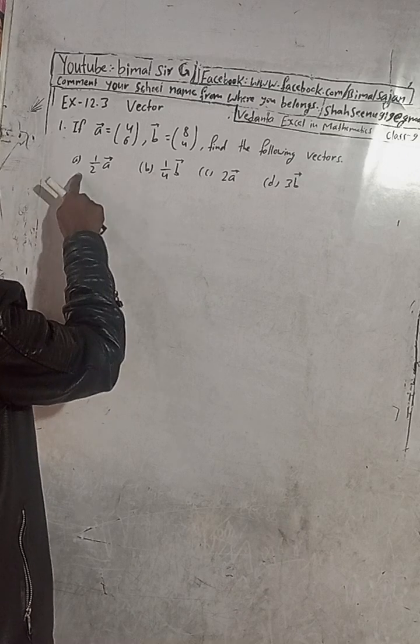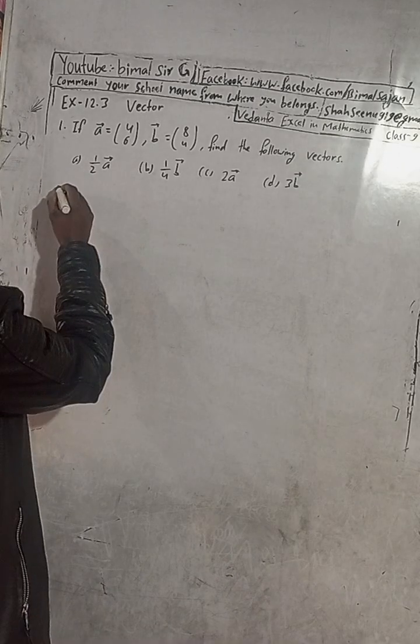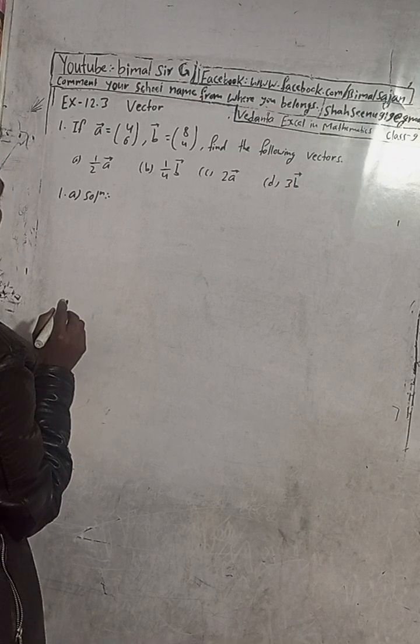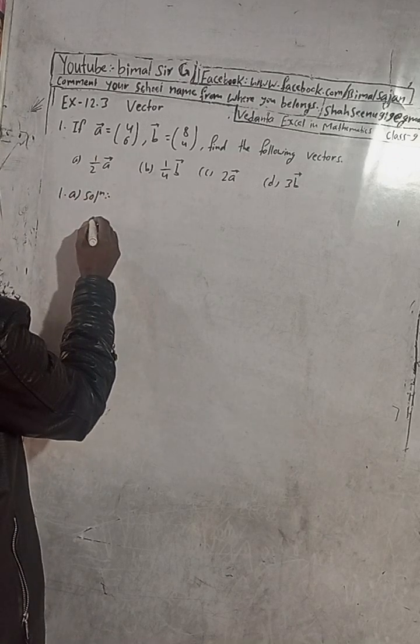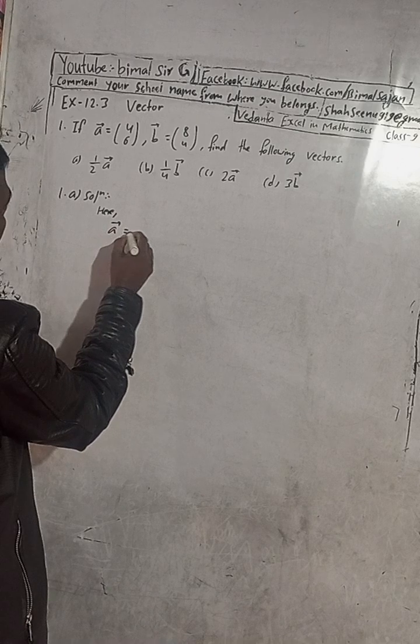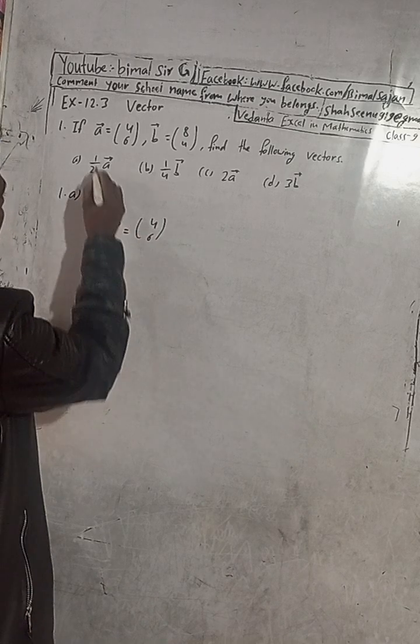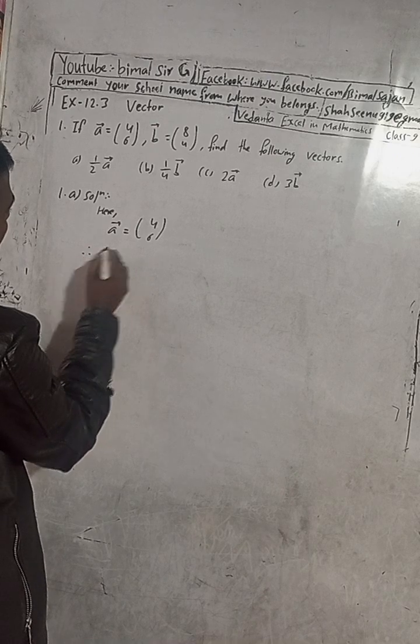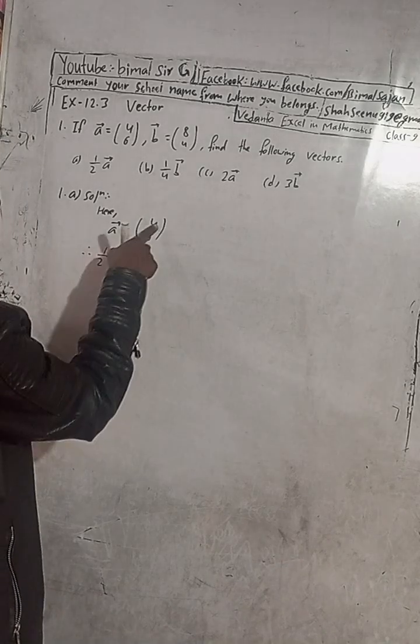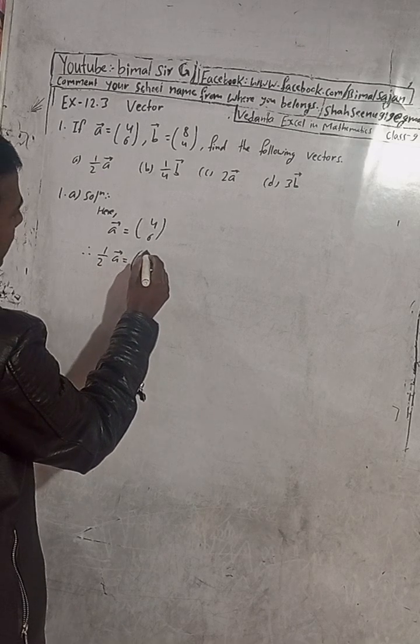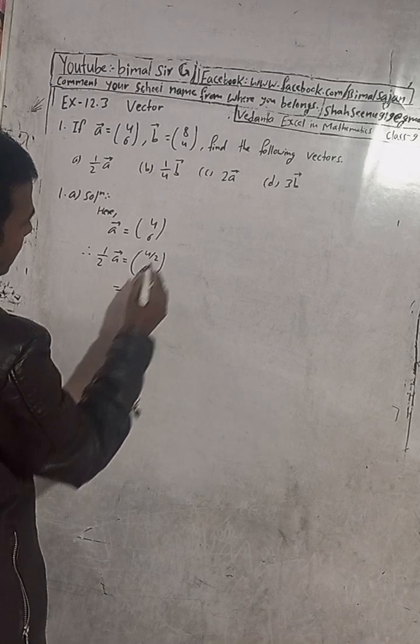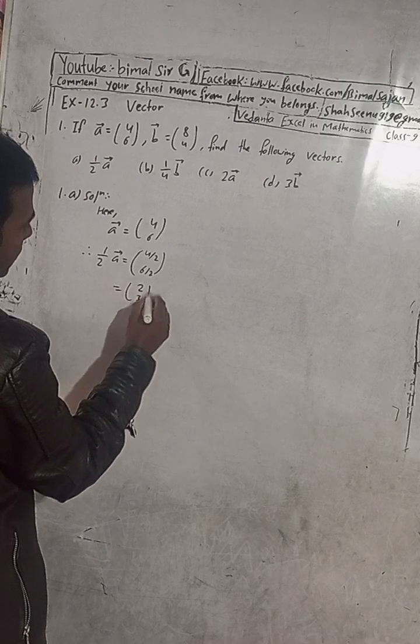So the question is: if vector a equals (4, 6) and vector b equals (8, 4), find the following vectors. Number 1a solution: we have to find 1/2 a vector. So given here a vector is equal to (4, 6), therefore 1/2 a vector is equal to, 1/2 means divide by 2, so 4 divide by 2 and 6 divide by 2. This is equal to 4 by 2 is equal to 2, and 6 by 2 is equal to 3. So this is solution of 1a.